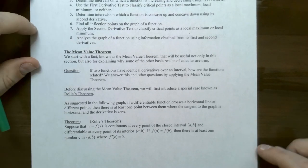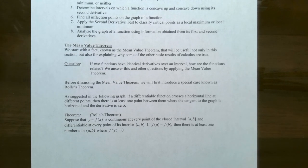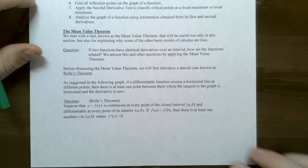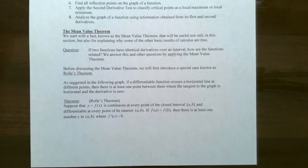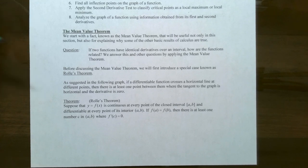Before we get to the mean value theorem, we're going to discuss a special case of the mean value theorem called Rolle's theorem. It's suggesting that if a differentiable function crosses a horizontal line at different points, then there's at least one point between them where the tangent to the graph is horizontal, which means the derivative is zero.